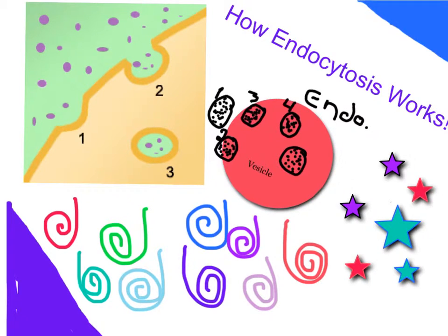Endocytosis is a process — what kind of process? An energy-using process. It absorbs molecules or substances by engulfing them in the cell with the membrane. And that's how endocytosis works.